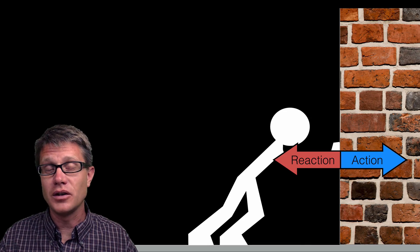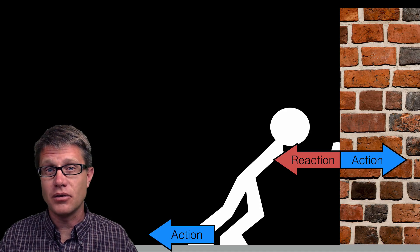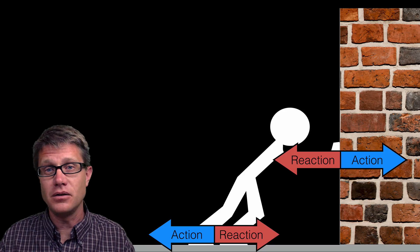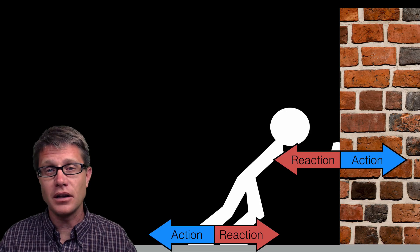Imagine pushing into a wall — you are applying an action into the wall, and the wall is actually applying an opposite and equal reaction on you. Now you do not go anywhere, and the reason why is you apply a force into the ground as an action, and there is a reaction force from the ground pushing back on you. So the net force on you is the same and you do not accelerate anywhere.